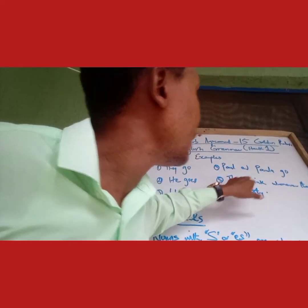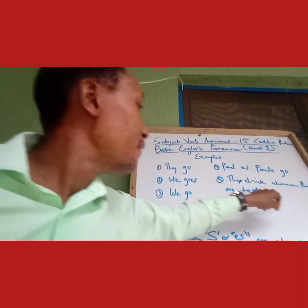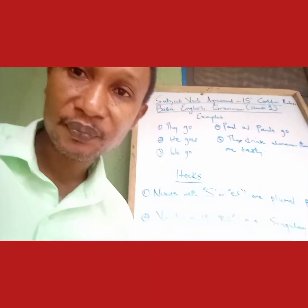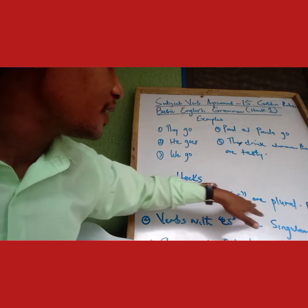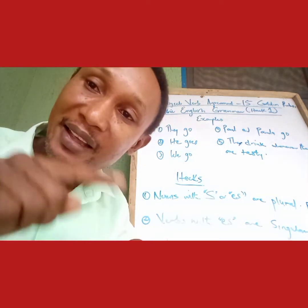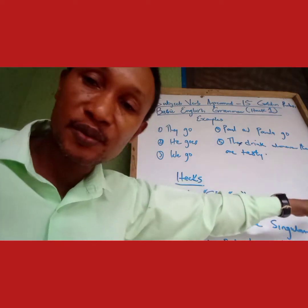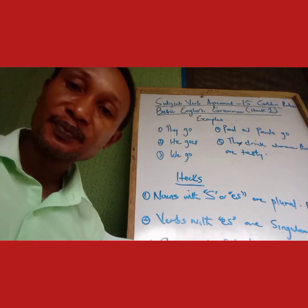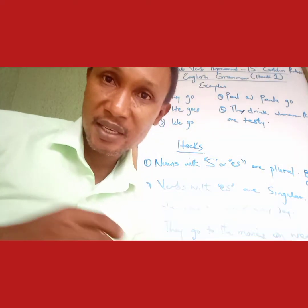They drink whenever they are thirsty. Now, nouns with -s or -es are plural — like 'boxes,' 'oranges,' 'lorries.' And verbs with -es are singular verbs. For example: 'She goes to school every day,' whereas 'They go to the movies on weekends.'